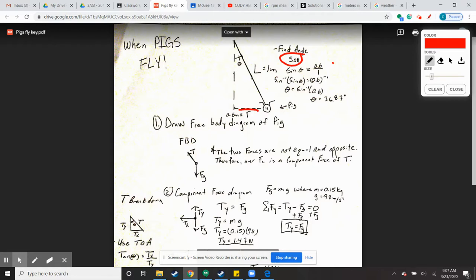So 0.6 divided by 1 is just 0.6. What you'll notice is I had to do an inverse trig function. Sine inverse is able to give you the angle if I give you a ratio.